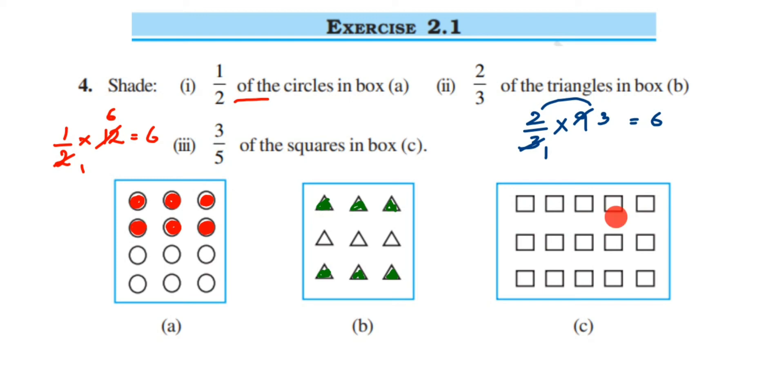So here we have to find out three-fifths of the squares. So it will become 3 by 5, 'of' means multiplication, and 15 are there.